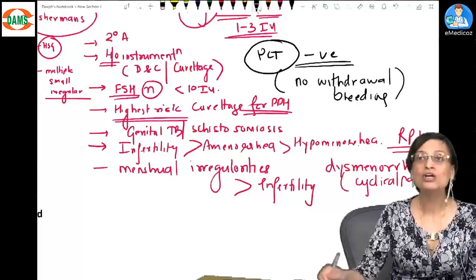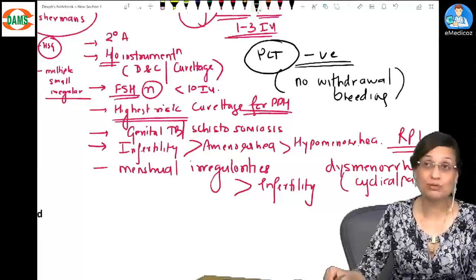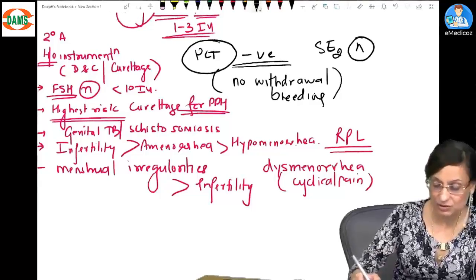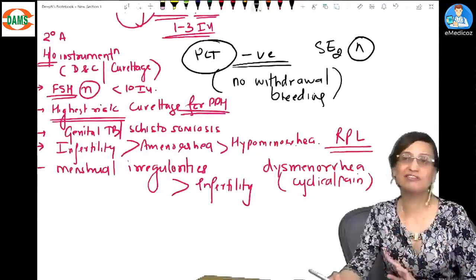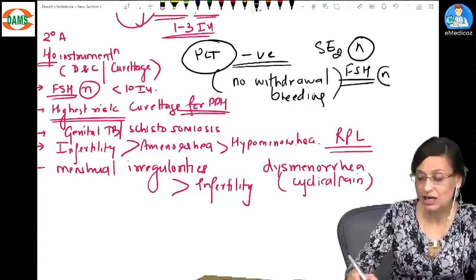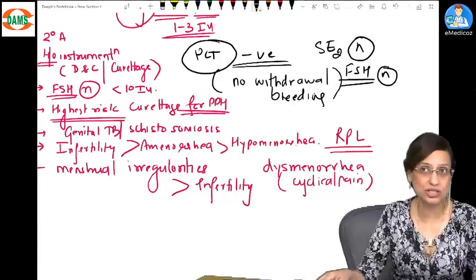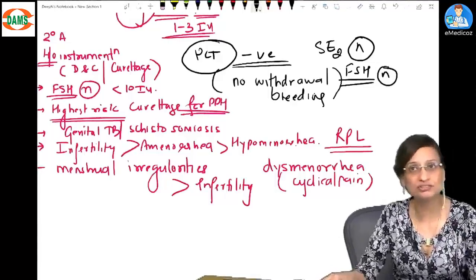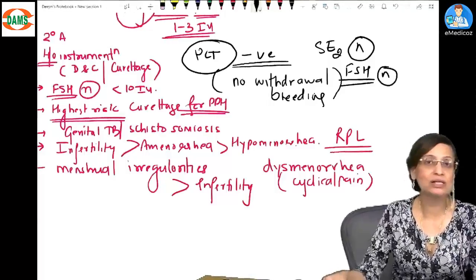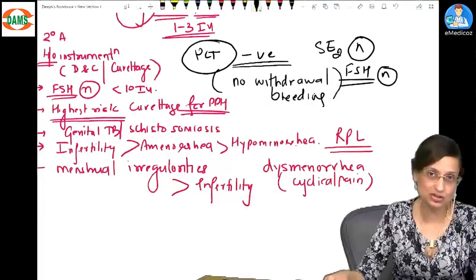Okay, so progesterone challenge test will be negative. Serum E2 levels will be normal. FSH also I have told you will be normal. E2 will also be normal. So your exams are specially asking about hormonal associations as well. So you have to know the findings. So E2 will be normal, FSH will be normal in Asherman syndrome. Is that clear?